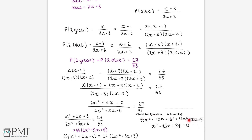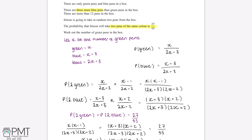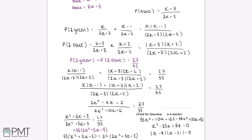We now have a quadratic to solve. Factorising, we need two values that multiply to give 84 and add to give negative 25; these are negative 21 and negative 4. So the quadratic factorises to (x minus 4)(x minus 21) equals zero, giving x equals 4 or x equals 21. Since there are more than 12 pens in the box, x cannot be 4, so x must be 21 — meaning the number of green pens is 21.